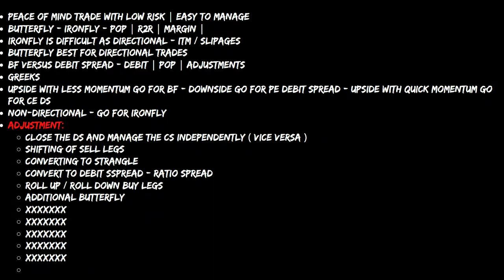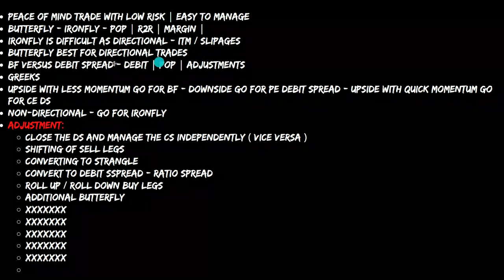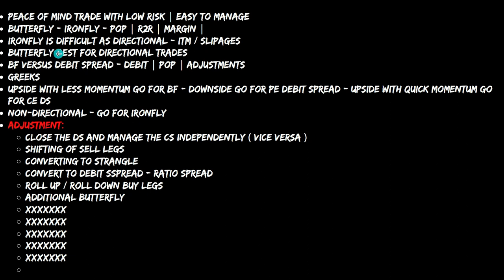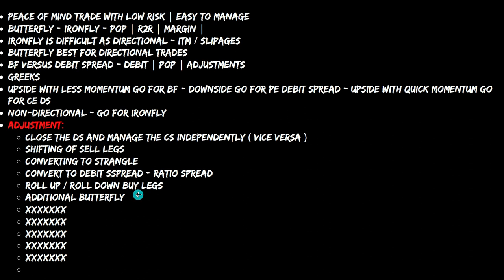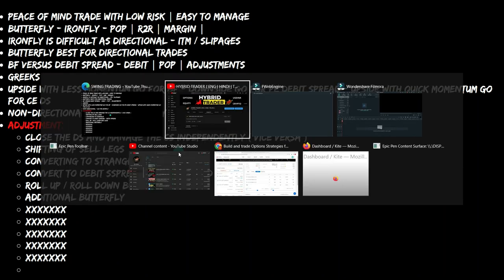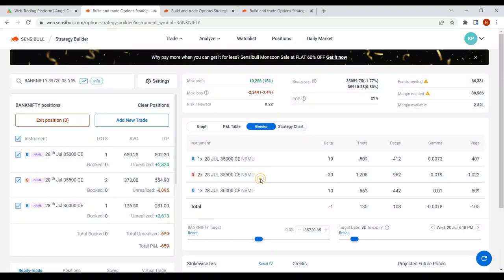You can make iron fly directional by cutting down the wing on the call side or put side, but I'll show you the disadvantages. Whenever you go for iron fly as a directional trade, you have to go in the money and you'll end up with slippage issues. Butterfly is the best for directional trades. Rather than just telling you theoretical things, I'll show you live adjustments — one, two, three, four, five, six adjustments on a real trade I've deployed.